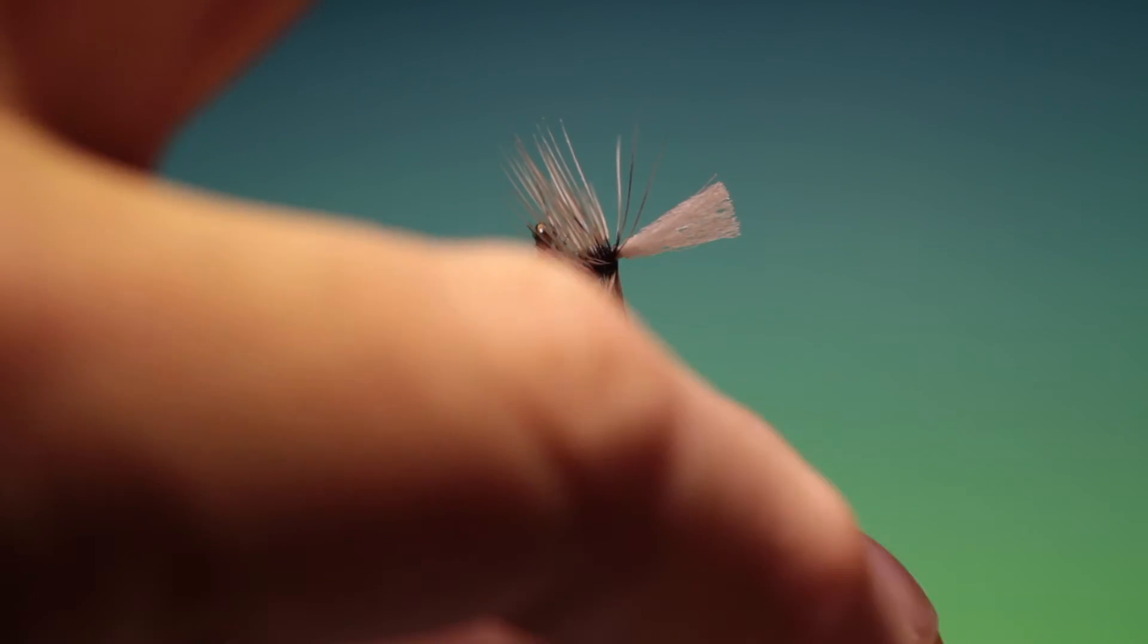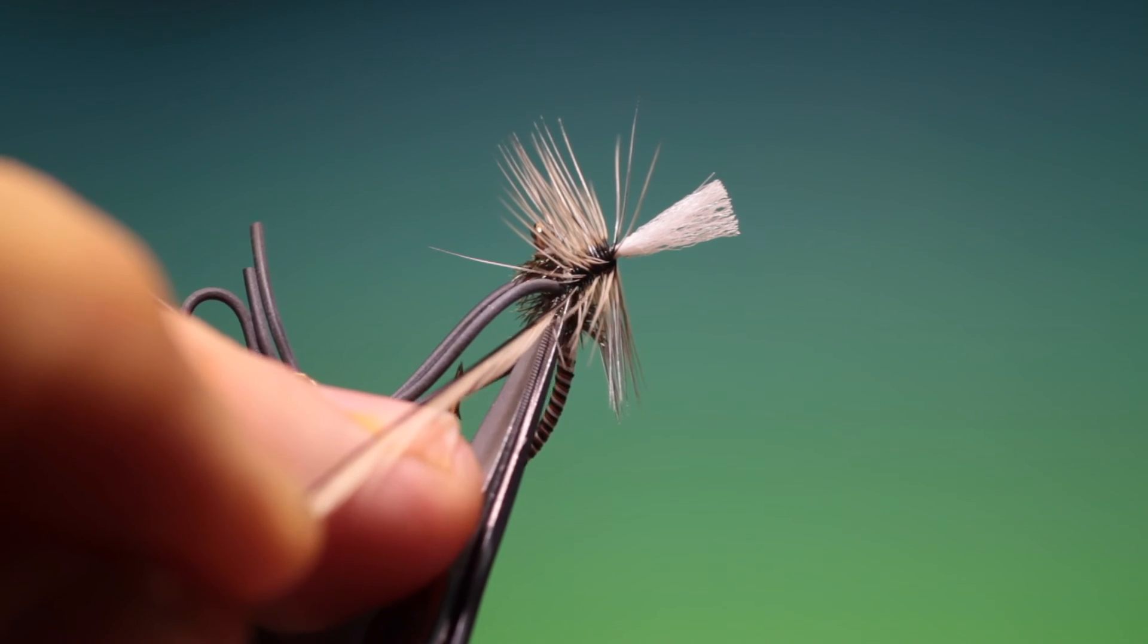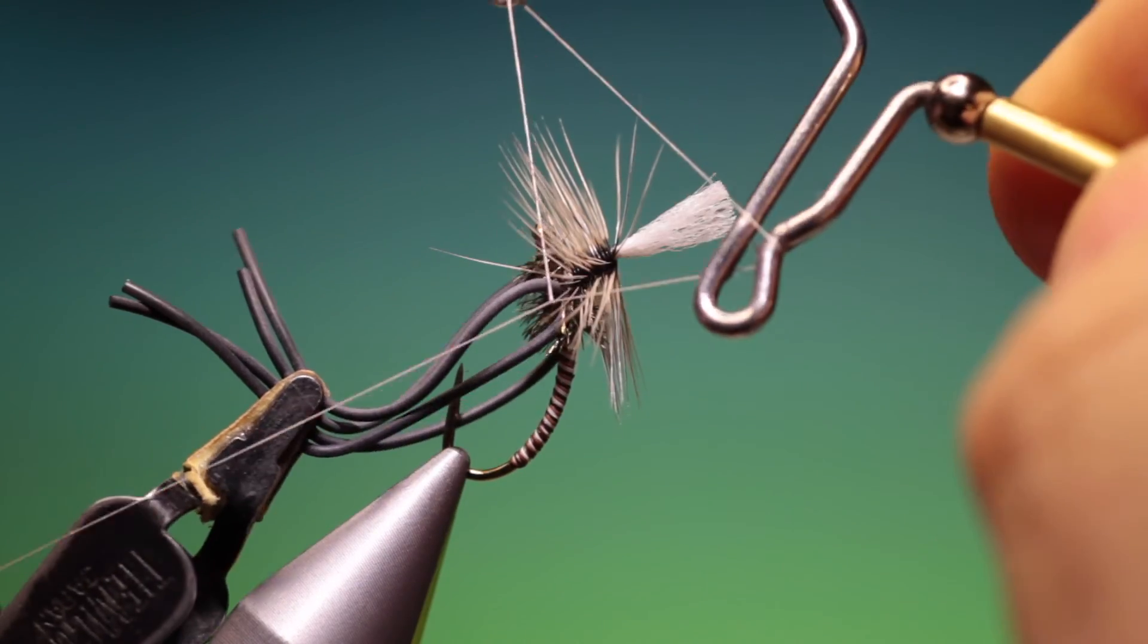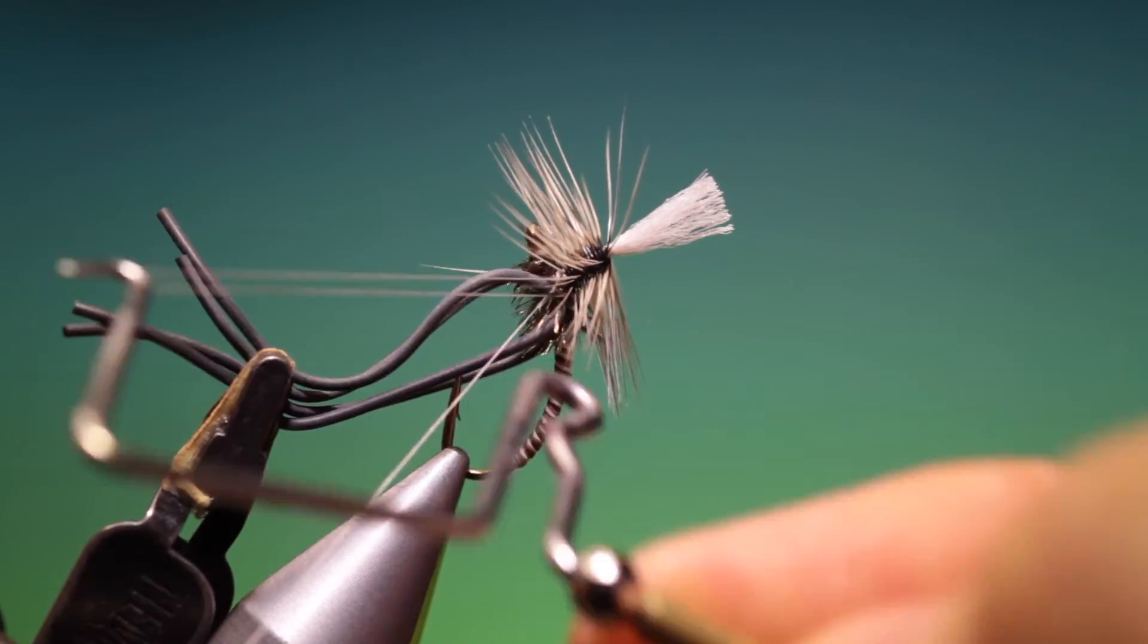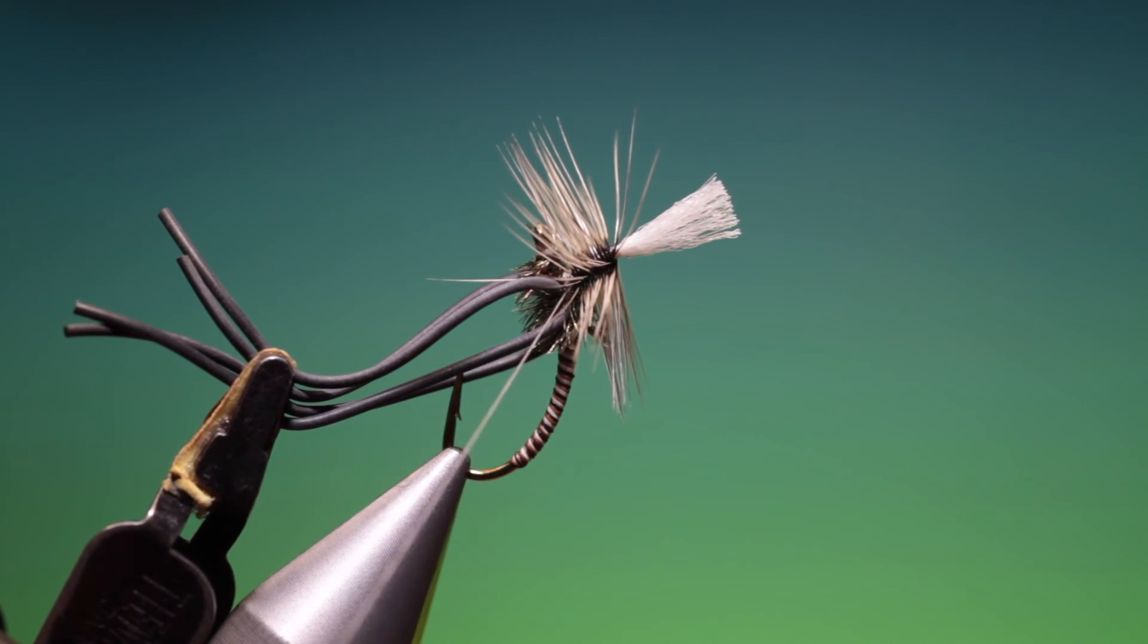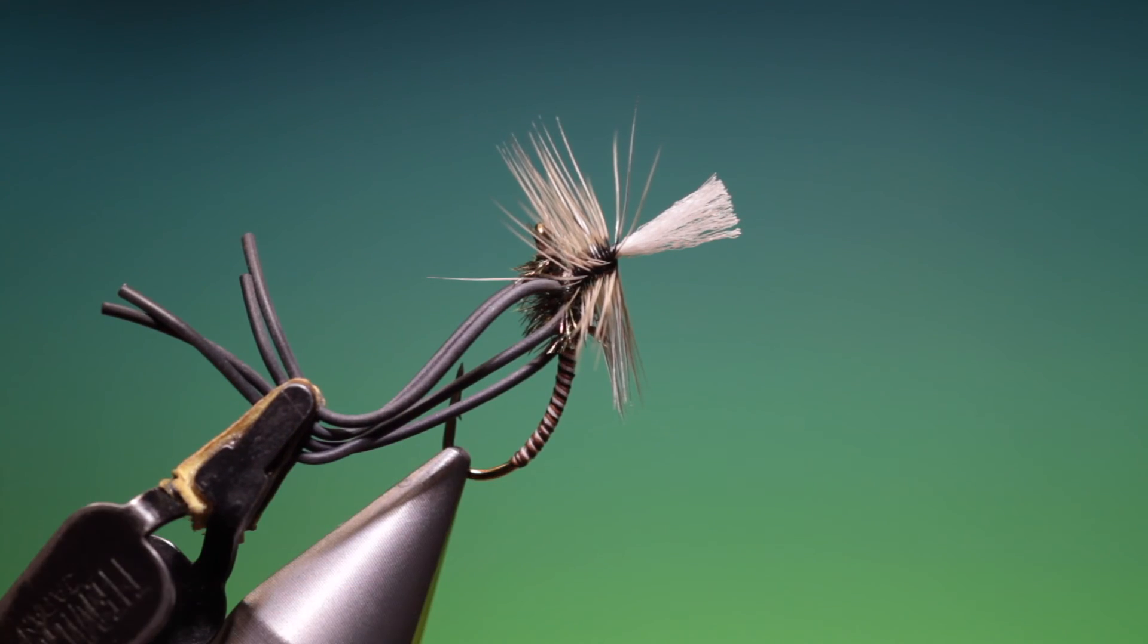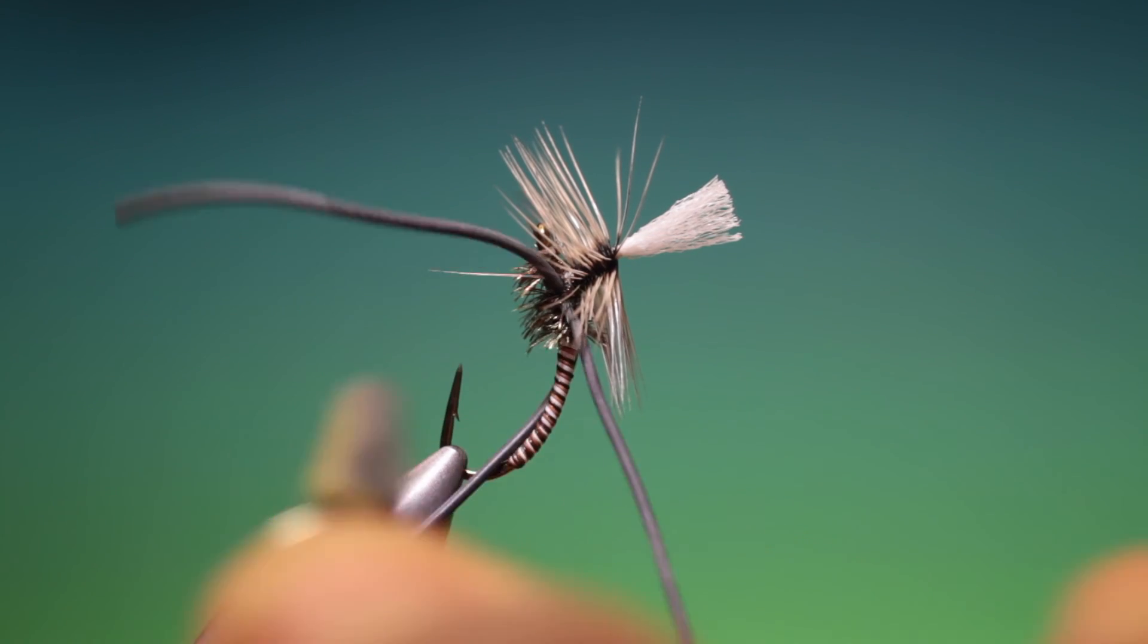Now I can trim off this hackle without cutting off any of the legs. Give it the last bit of finish. You can put a drop of varnish on the tying thread here if you wish. But with wax thread it's not necessary I don't believe. So. Remove that. Remove that. And we can turn it around.